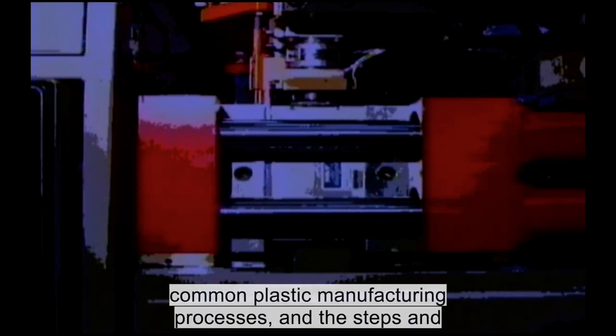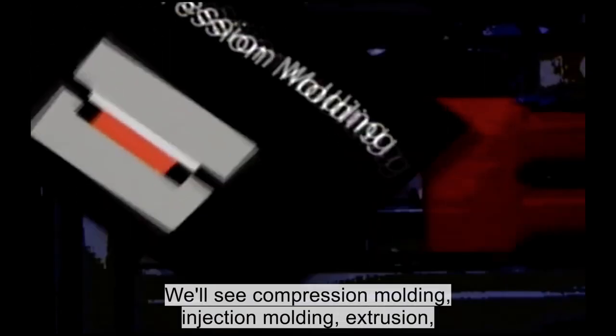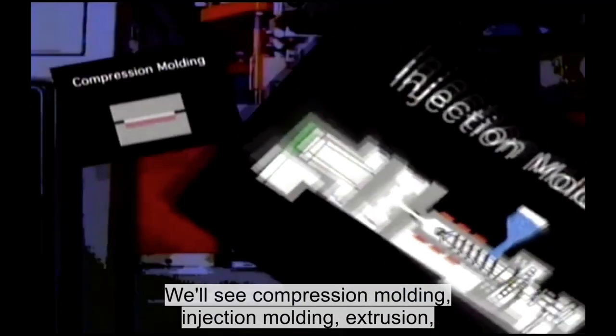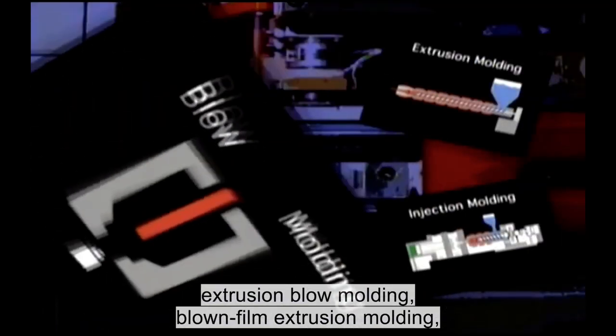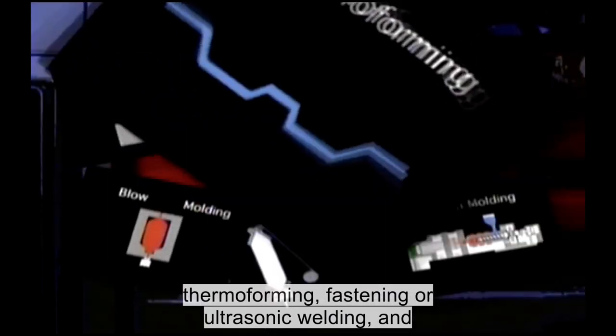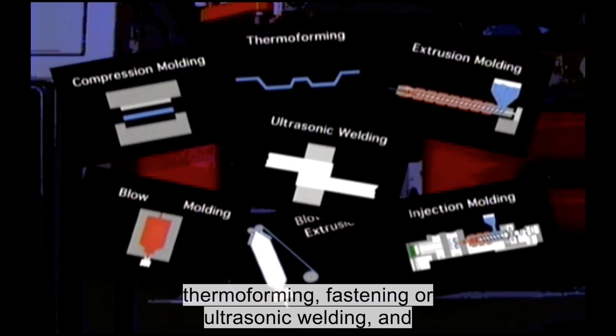In this video, we'll take a look at some of the most common plastic manufacturing processes and the steps and technology involved. We'll see compression molding, injection molding, extrusion, extrusion blow molding, blown film extrusion molding, thermoforming, fastening or ultrasonic welding, and decorating.